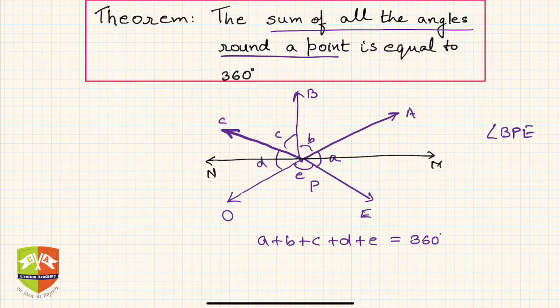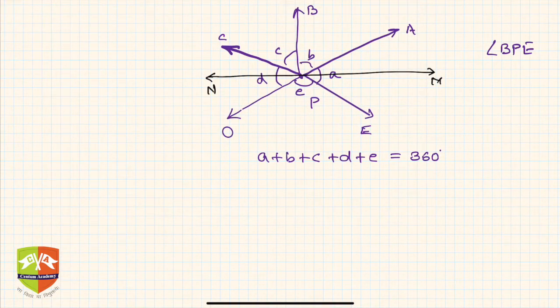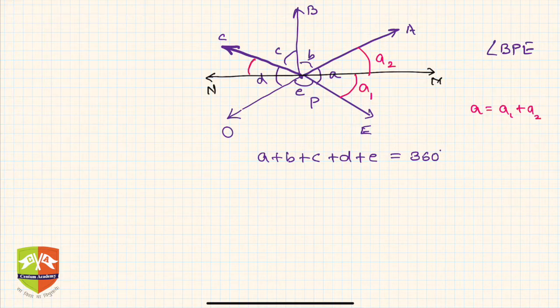Now if you see, a plus b plus c plus d plus e can be written as follows. If you see, a itself is a sum of, let's say I am now naming it as a1 and a2, two parts. So this PM ray divides angle APE into two parts such that a is equal to a1 plus a2. Similarly d, let's say this is d1 and this is d2. So I can also write d is equal to d1 plus d2.